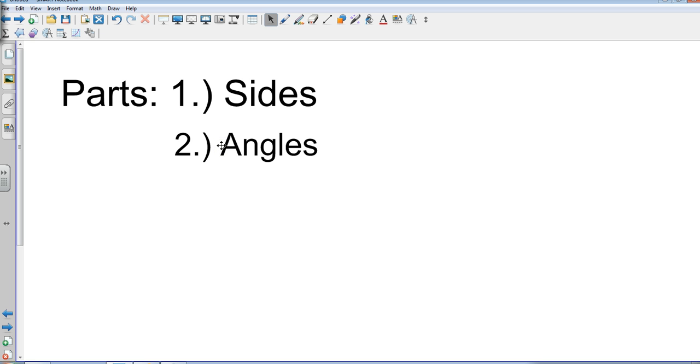So there are two ways the book can show you that they're congruent. They can give you the angles or the lengths of the sides, or they'll put the little markings on them. So let's go ahead and look at a couple of examples.